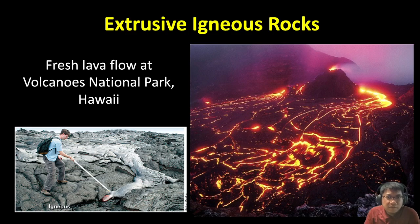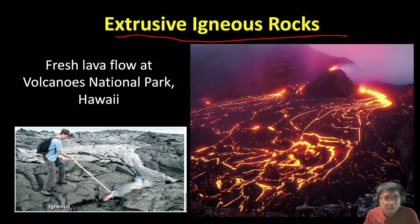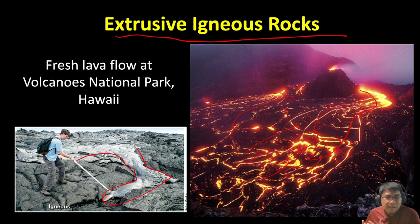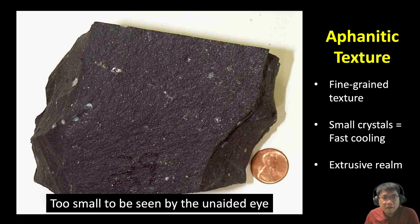Here is an example from Hawaii, where you can see the flow of lava on the surface. As you can see in this picture, when this hot lava cools down and solidifies, it will eventually become igneous rocks. This is an example of extrusive igneous rocks.